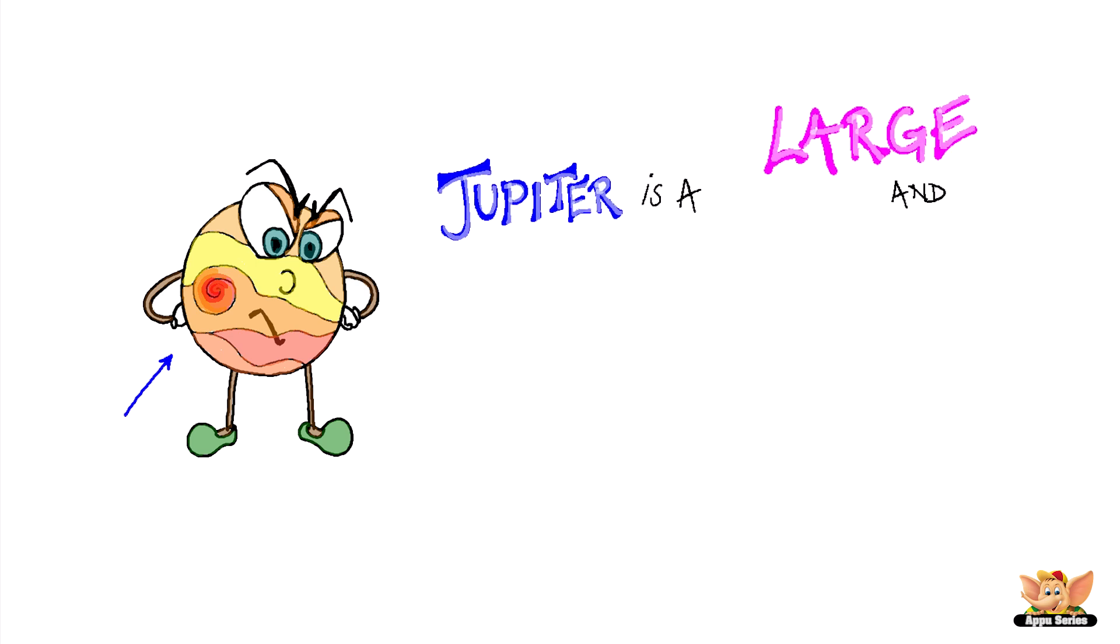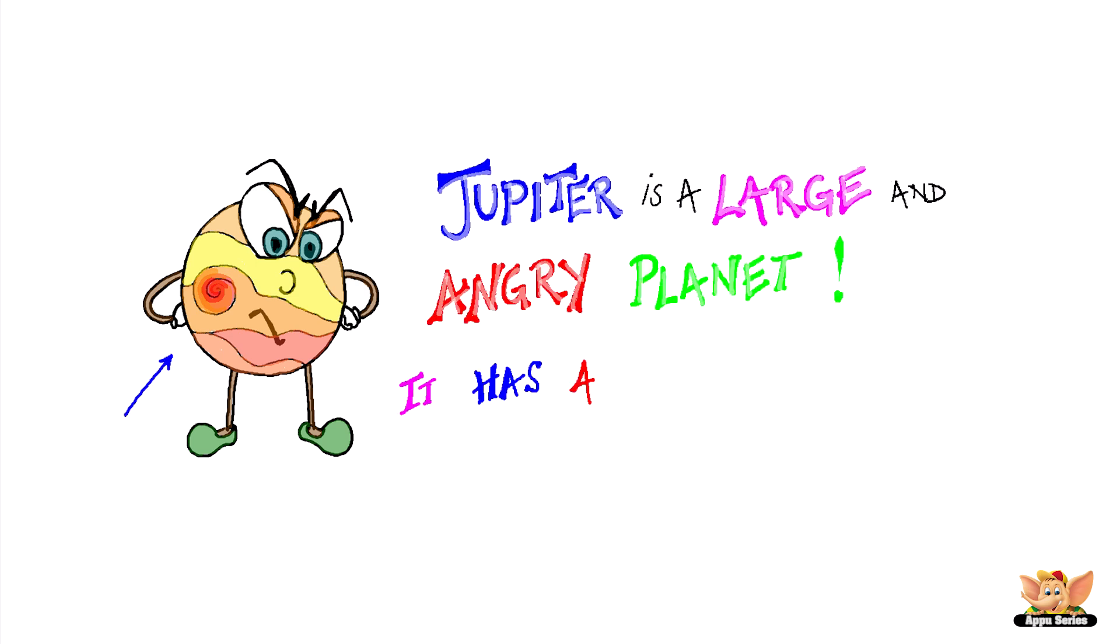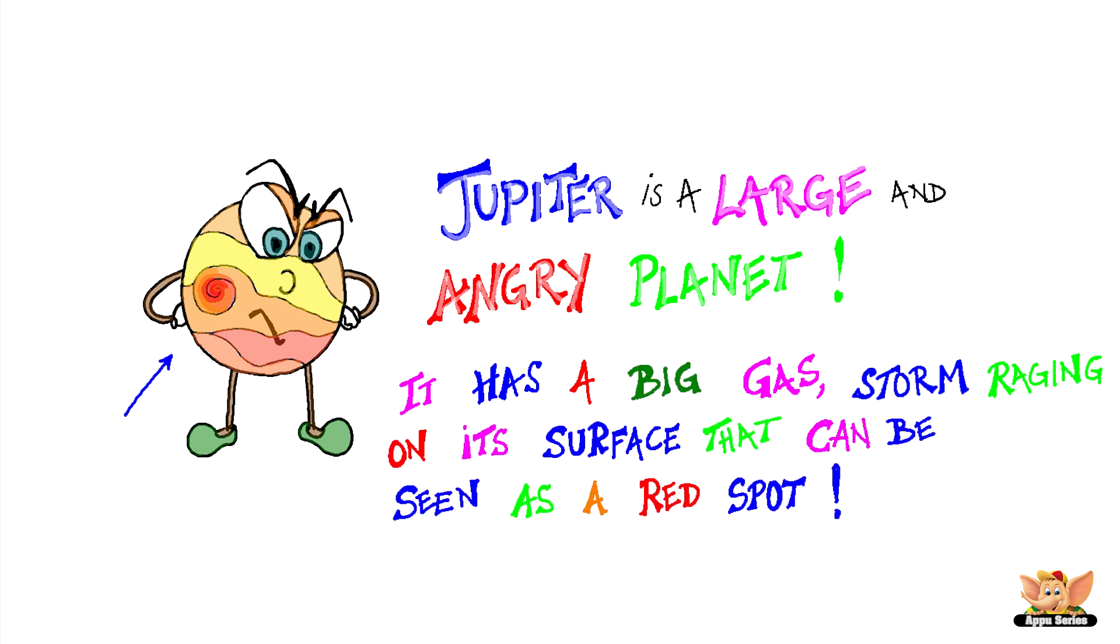Jupiter is a large and angry planet. It has a big gas storm raging on its surface that can be seen as a red spot.